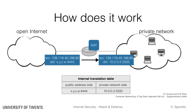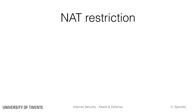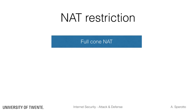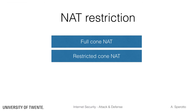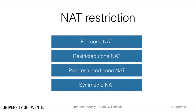Besides remapping IPs and ports, NATs also need to decide if an outgoing or incoming connection is allowed. Even though the overall mechanism of IP and port remapping remains the same, NAT implements several types of restrictions. We therefore have full-cone NAT, restricted-cone NAT, port-restricted-cone NAT, and symmetric NAT. Let's have a look at each one of them.